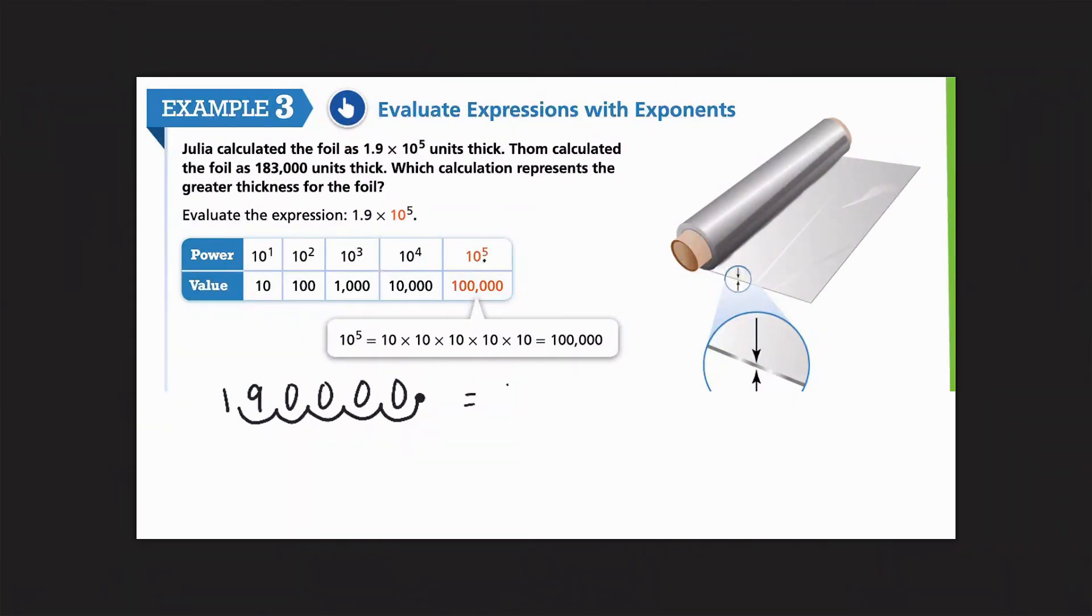Okay? And my decimal is going to be moved out here, because I've multiplied 1.9 times 100,000. So, now my answer... And I can see that I have a 0 here. Okay? So, whenever I put my 0s out, I like to say 1s, 10s, 100s, comma. And then, you can go ahead and move that into the next unit. So, we have 190,000. So, which calculation represents the greater thickness? Well, this Tom guy said that it was 183,000. This one is 190,000. So, this one represents the greater thickness, because this is a larger value.